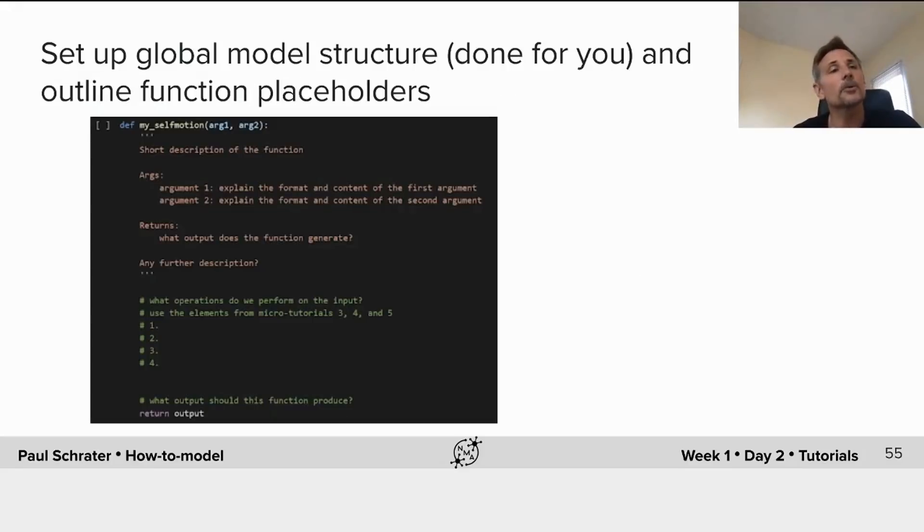At this point, what we're going to do is set up a global model structure, which is done for you. And we're going to outline function placeholders. So this is a stage in which you're putting together the outline, just like you might outline a paper before you try to write it.